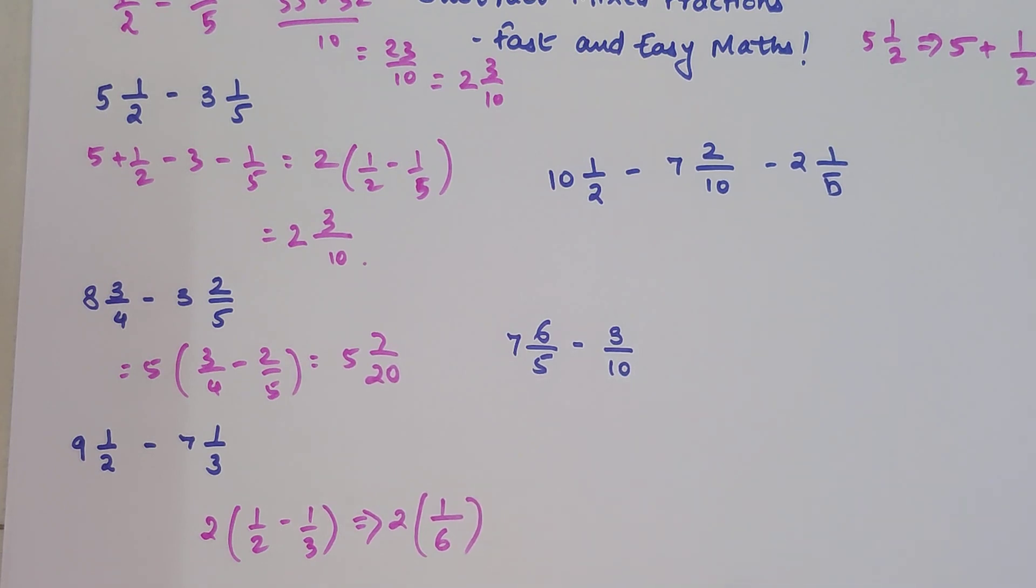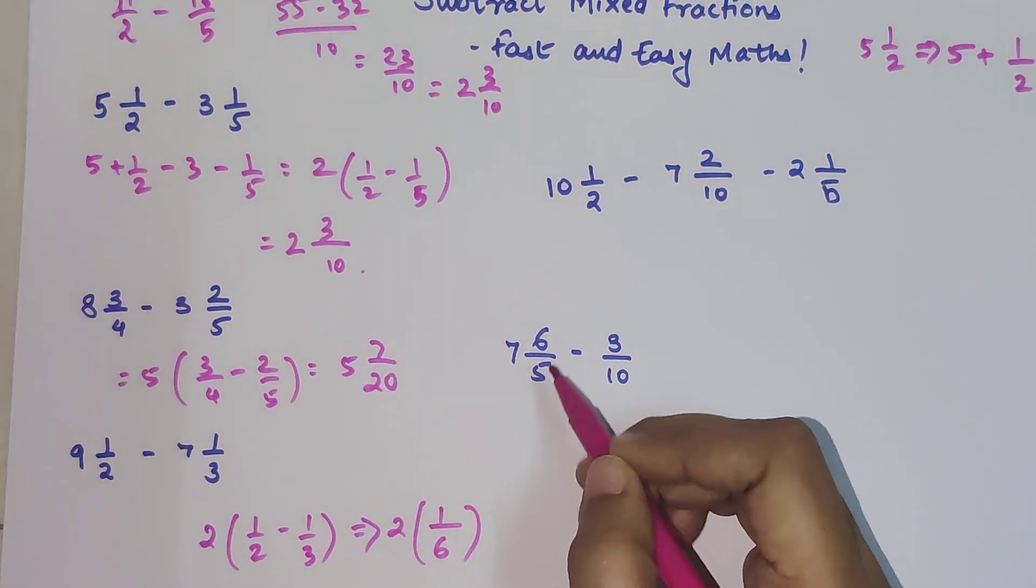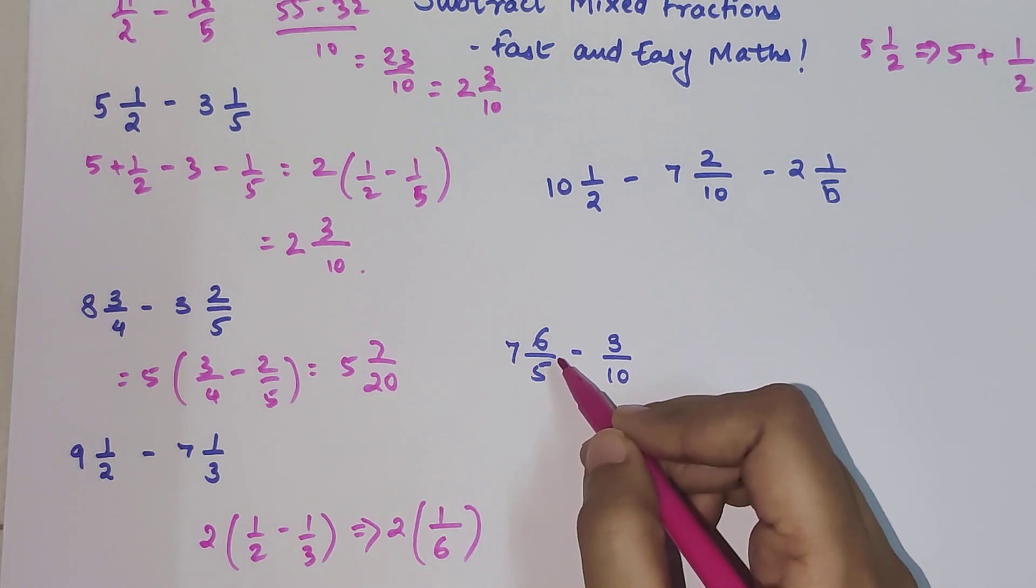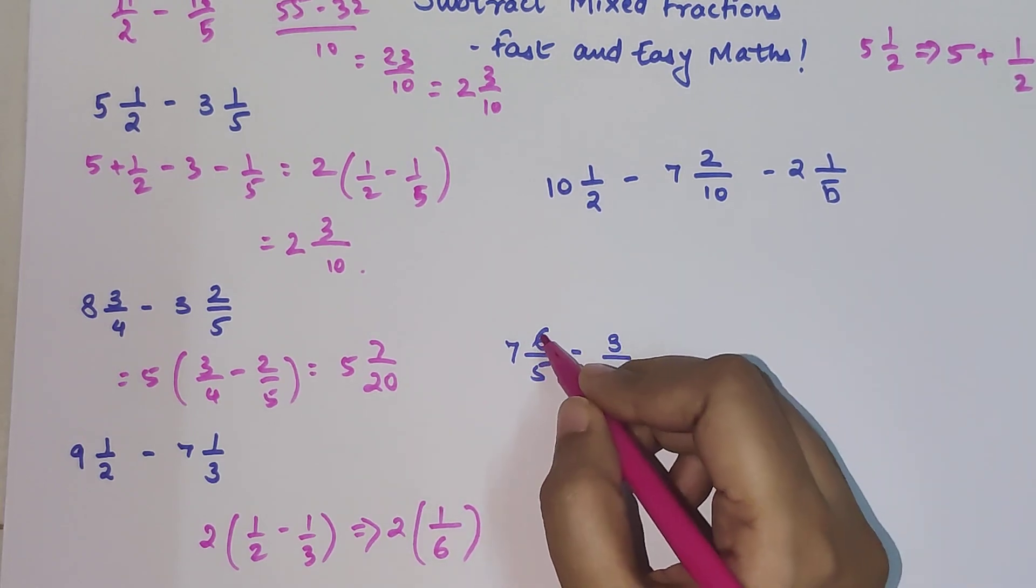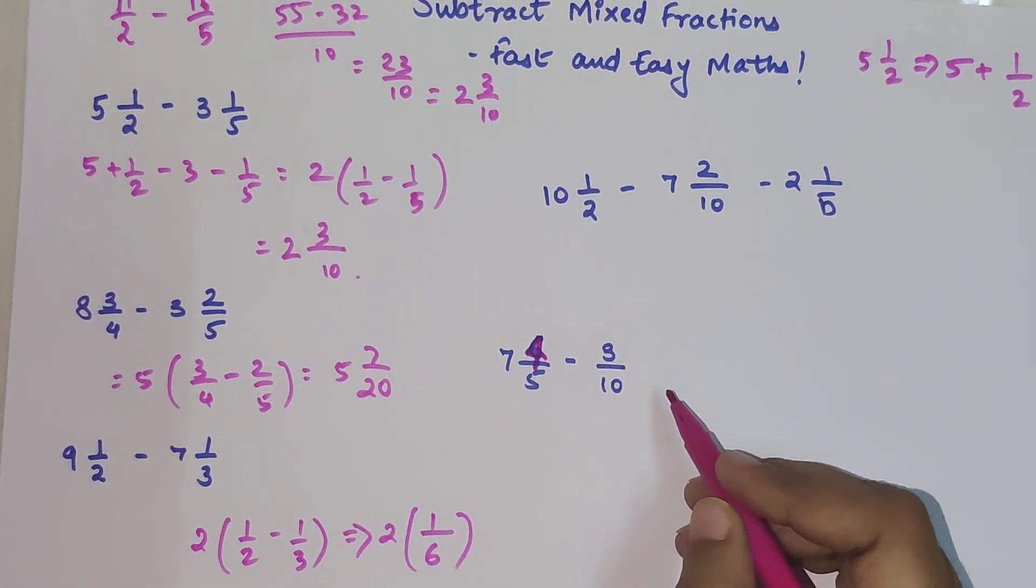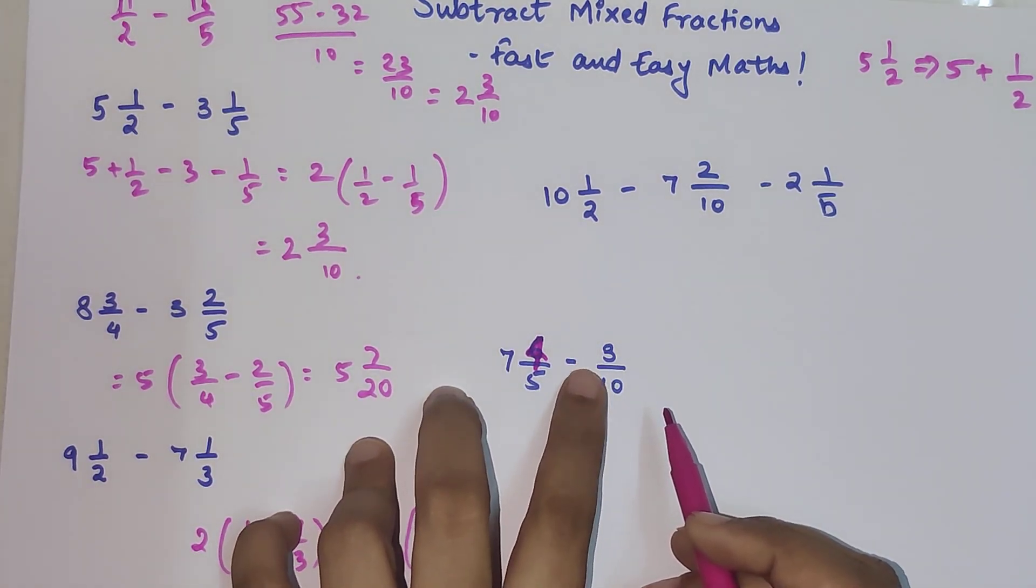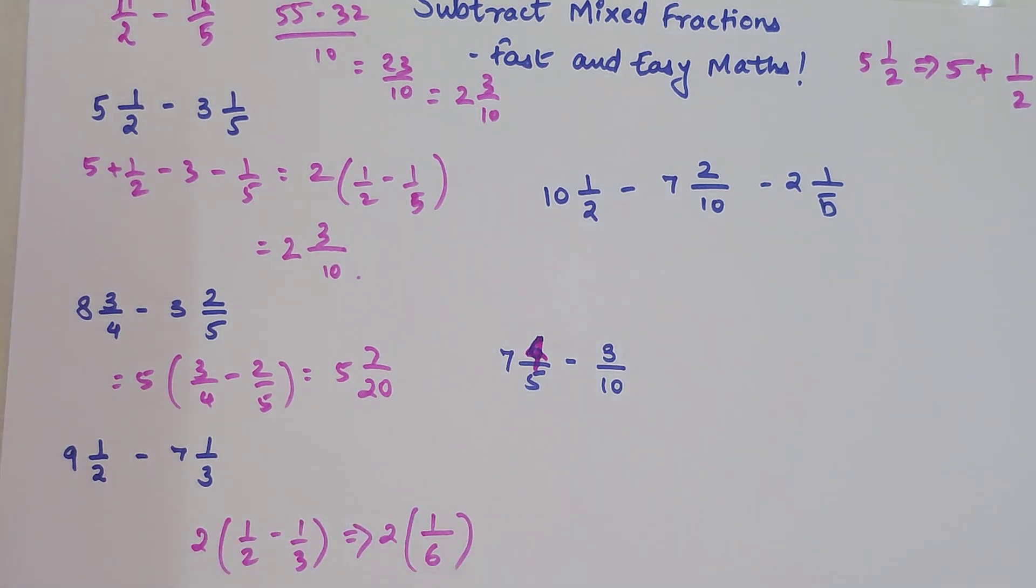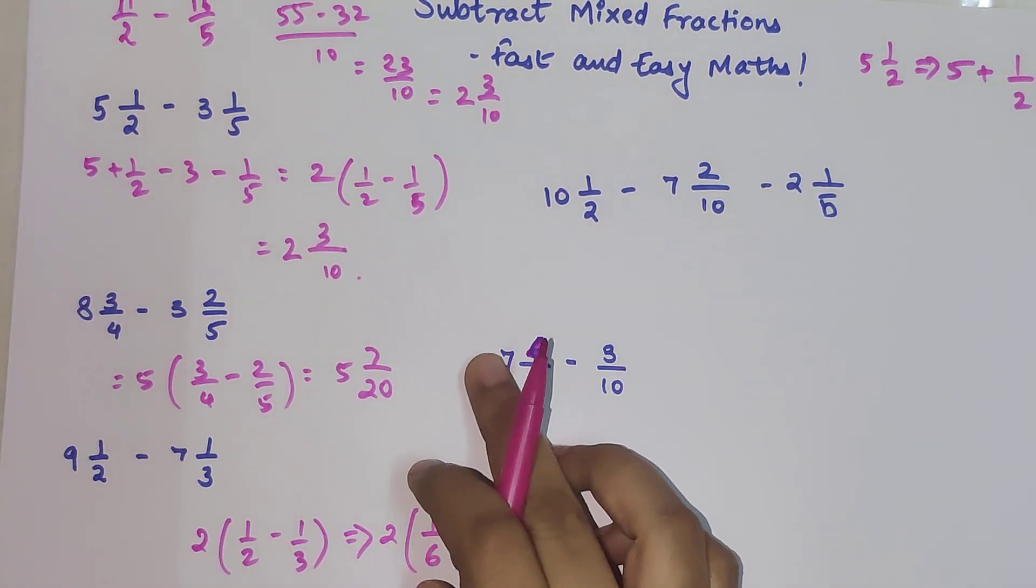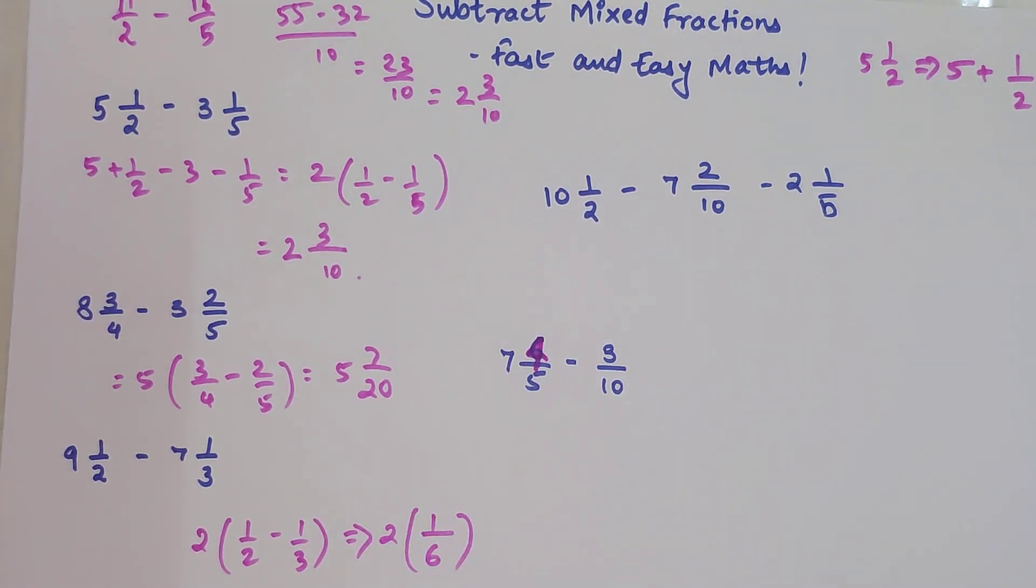So in that case, what do you do? Let's make it 7 4/5. Normally when nothing is given we take it as 1. Don't make that mistake here. When there's no integer part, we do not subtract this particular integer with any other integer. Do not consider it as 1 and make it 6. It's not going to work.